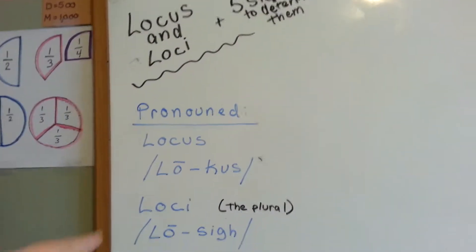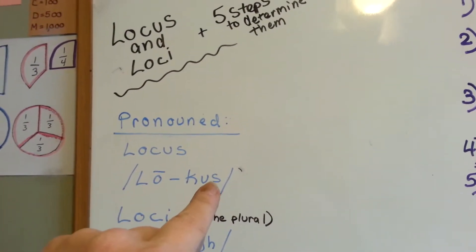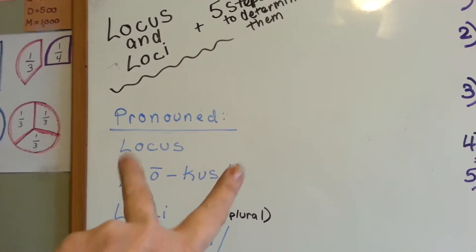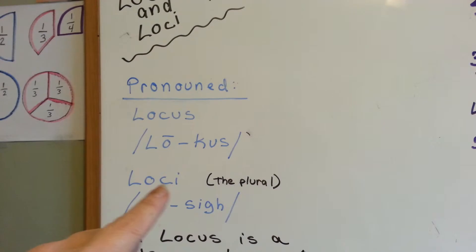Alright, let's get this out of the way first. It's pronounced locus, lo-cus. See? When you see two lines like this, that means the pronunciation of.